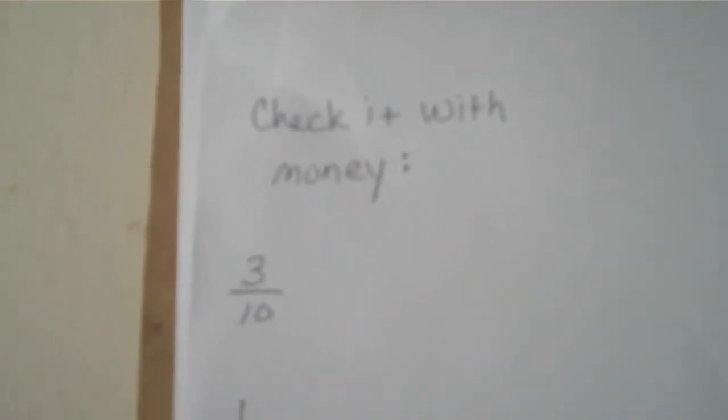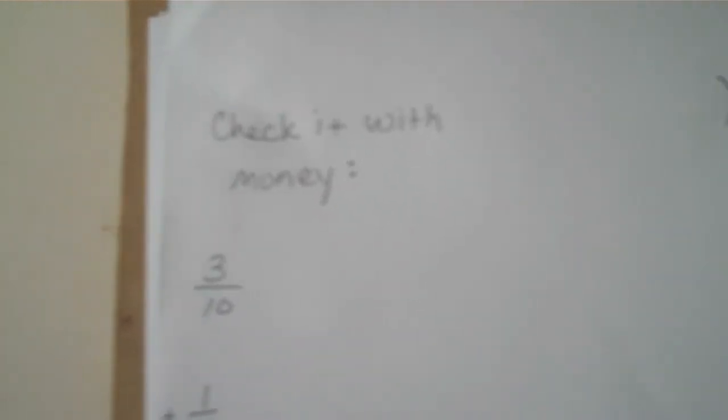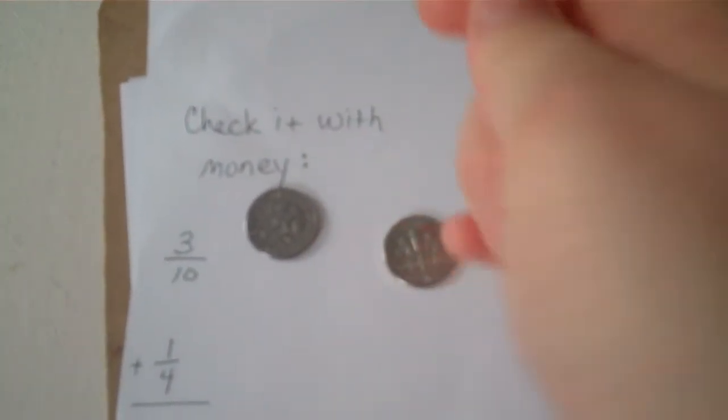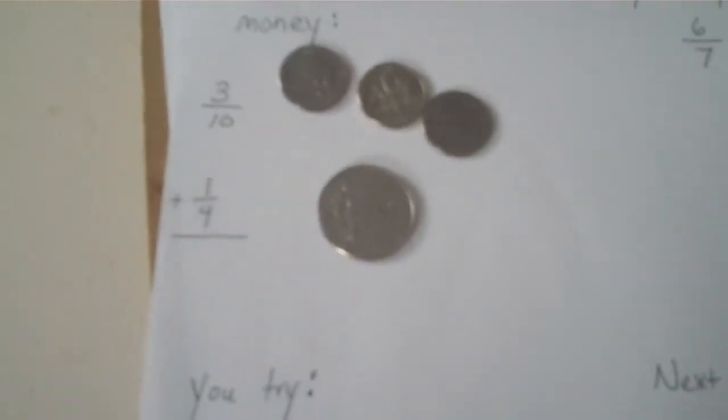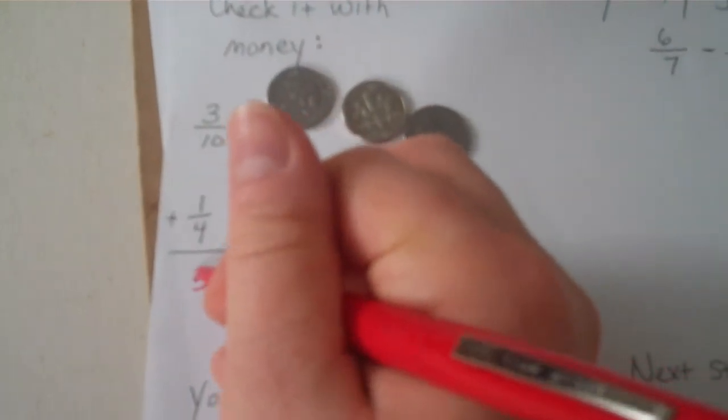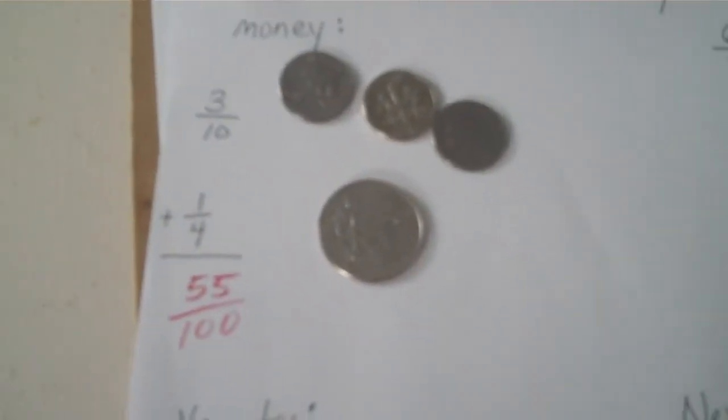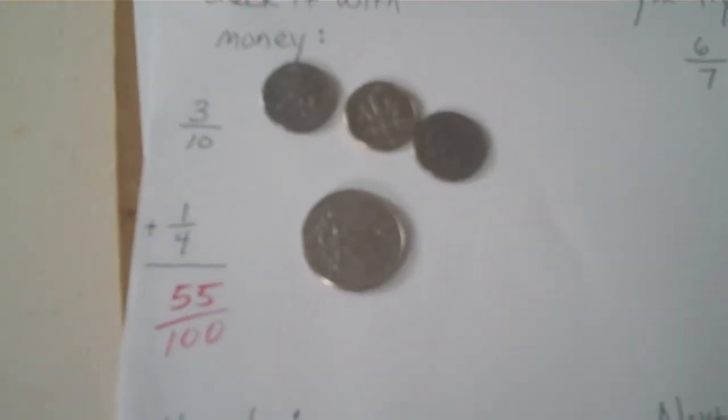Let's check it with money. Does three tenths of a dollar plus one fourth of a dollar equal fifty-five hundredths of a dollar, or fifty-five cents? Twenty-five, thirty-five, forty-five, fifty-five. It totally does.